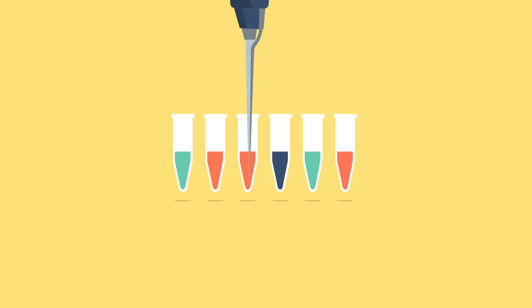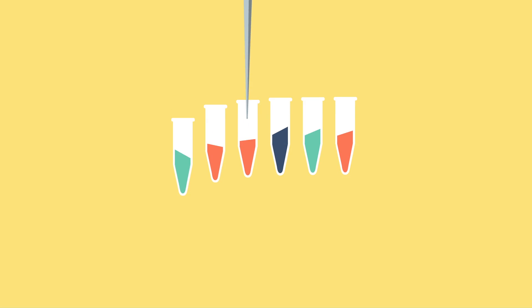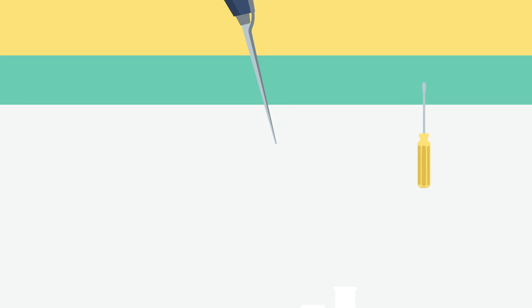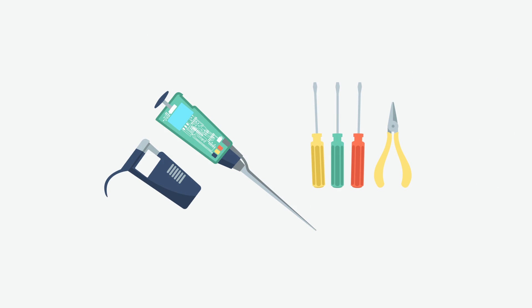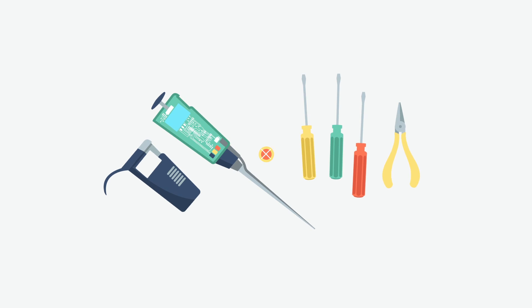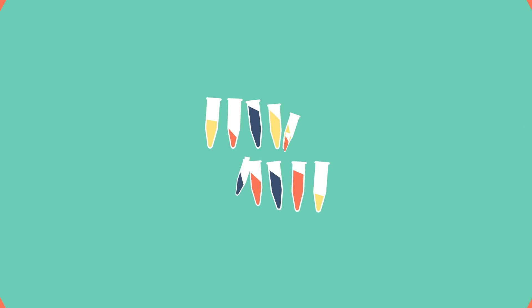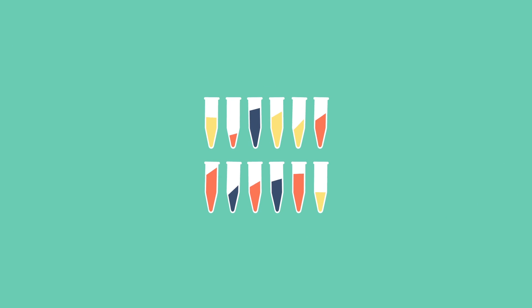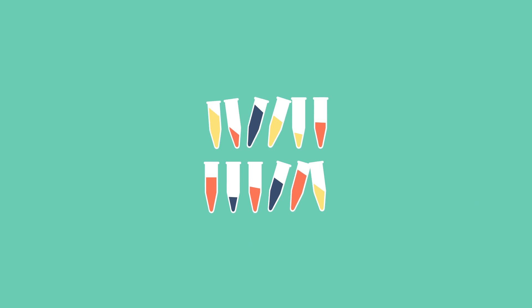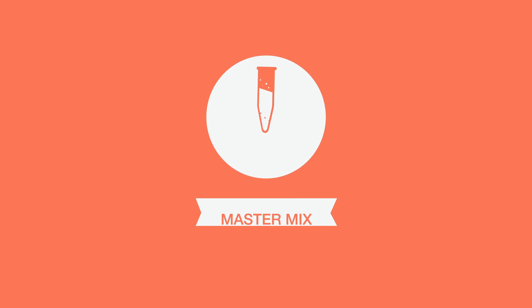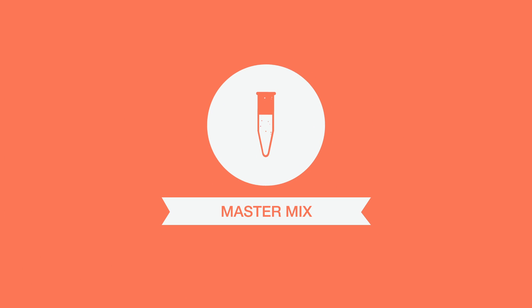Reason number five, seemingly trivial, is variation from sample pipetting. To overcome this, calibrate your pipetter and limit pipetting steps. Even better, reduce pipetting variation by using a single tube master mix.